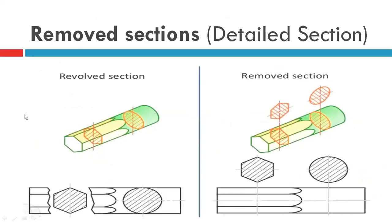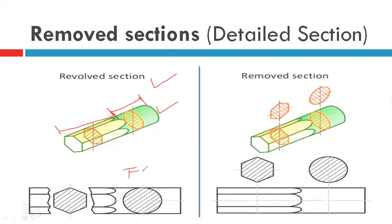Now we differentiate between the revolved section and the removed section with two examples so you can understand easily. This is the revolved section example: a bar object having different cross-sections. One half of the bar has a hexagonal shape and the remaining half has a circular cross-section. This is shown as your front view. In this case the top view would look the same as the front view, so there is no need to show it; and if we showed the side view it would be either hexagonal or circular, creating confusion rather than clarity.